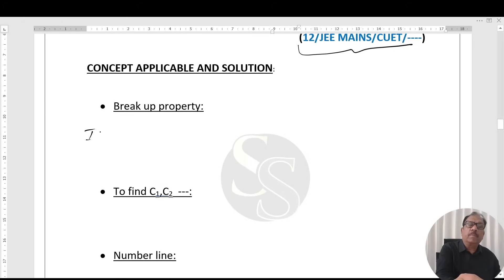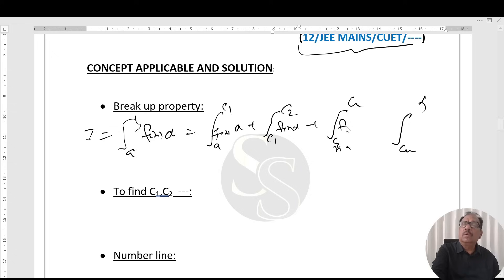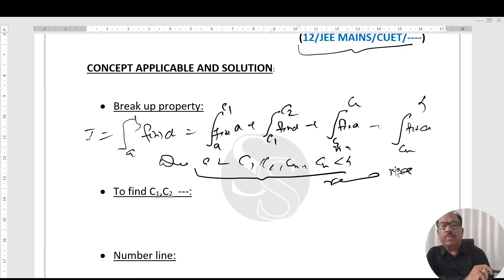The concept is breakup property. The breakup property states that integral from a to b of f(x) dx equals integral from a to c1 plus c1 to c2 plus c2 to cn-1 plus cn-1 to cn plus cn to b of f(x) dx, where c1, c2, cn-1, cn all are between a and b and all are real numbers.